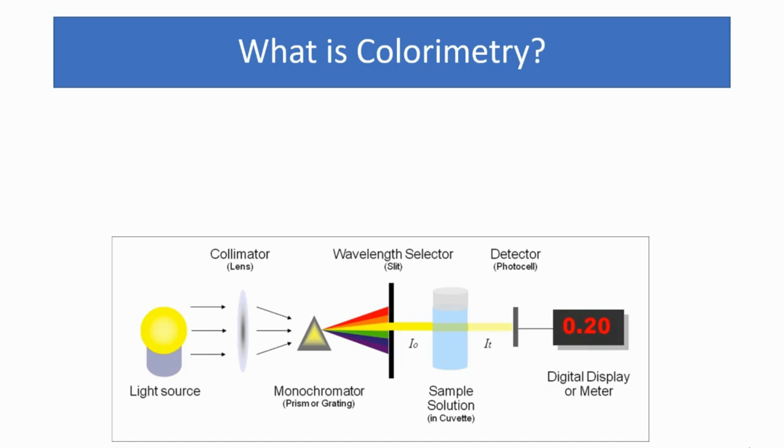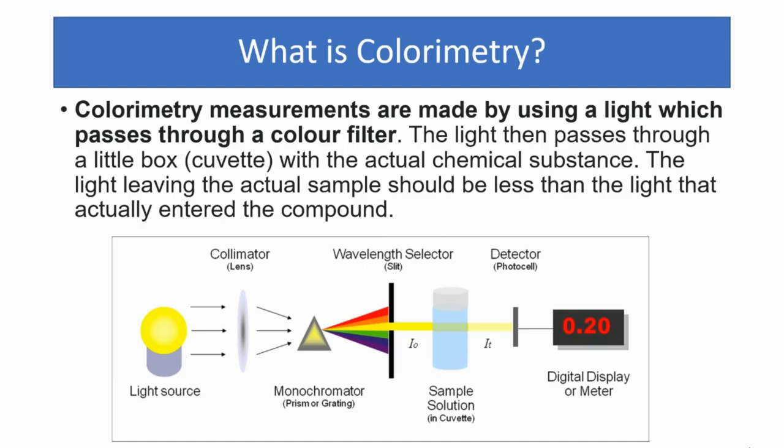So what is colorimetry? The measurements are made by using a light which passes through a color filter. The light then passes through a little box called a cuvette with the chemical in it. The light leaving the actual sample should be less than the light that entered the compound, and it's detected by a photo cell.